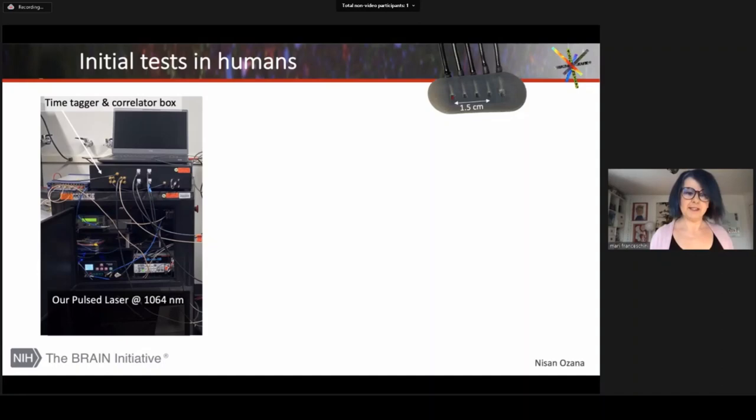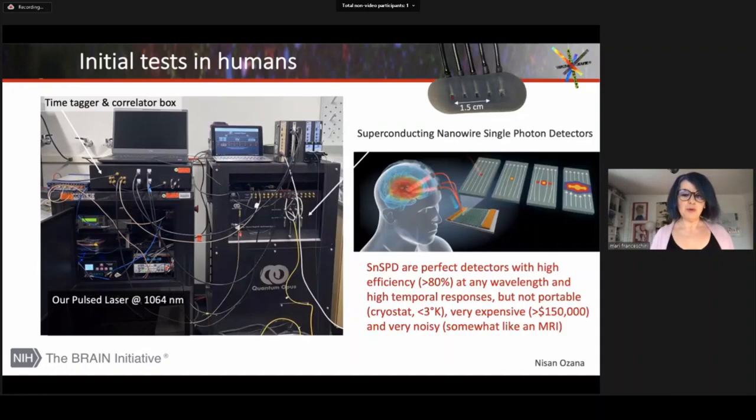For detectors, while we wait for Lincoln Lab development of SPAD, we are using superconducting nanowire single photon detectors. These are optimal detectors with very high photon efficiency and high temporal response. But the problem is they're very bulky, they are very noisy, they need a cryostat because they operate at temperatures less than three Kelvin, and they are very expensive. So definitely it's okay for a few channel proof of principle, but it cannot be extended to a full head system.